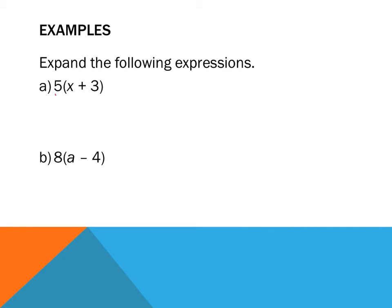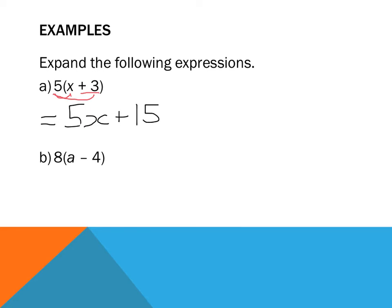I multiply everything on the inside with what's on the outside, one term at a time. Positive 5 multiplied by x — I don't write the times sign in algebra, I just write it as 5x. That's my first term expanded. My second term is positive 5 multiplied by positive 3, because there's a plus in front of it. Positive 5 multiplied by positive 3 is positive 15.